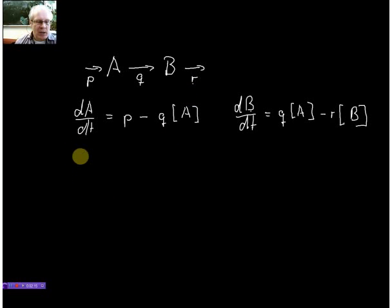Now at steady state, we know that dA over dt doesn't change, so the concentration of A in the steady state does not change anymore, so we can write dA over dt equals zero, and therefore we can write p minus q times A equals zero.